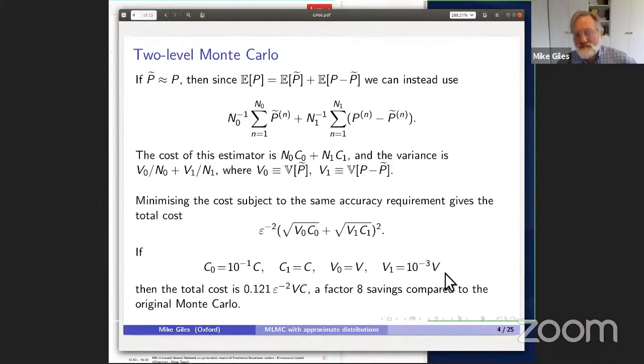To put some numbers to this, if P tilde, the approximate P, has a tenth of the cost of the regular P, and the variance for the correction V1 is 10 to the minus three times the original variance, then we end up approximately with a factor of eight savings compared to the original Monte Carlo.